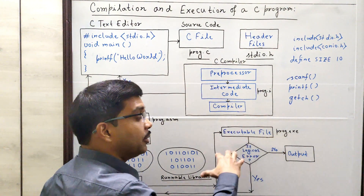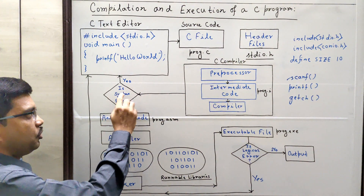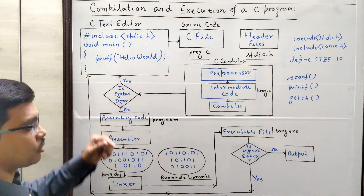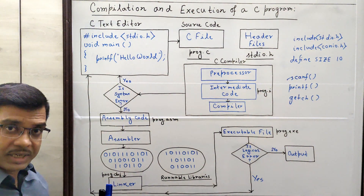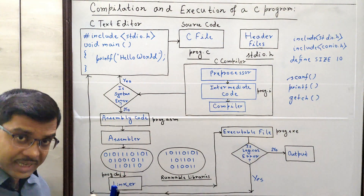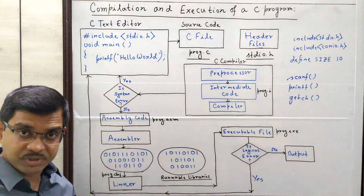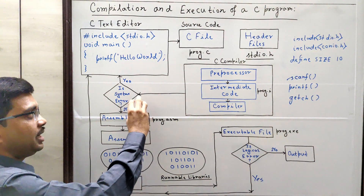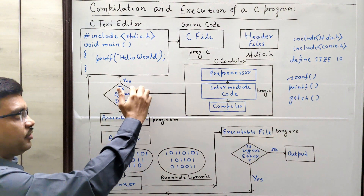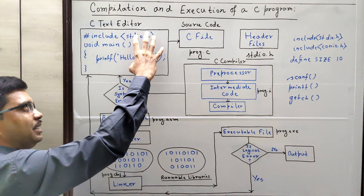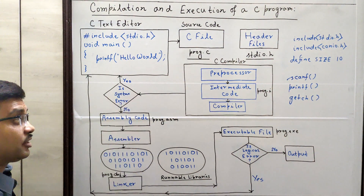Now, after preprocessing, the compiler will compile the program. In compilation, what will actually happen? It will check — this is called a decision box — whether there is any syntax error or not. Syntax error means any kind of typographical error: suppose you have missed a semicolon, missed the double quotes to print a string, used a variable that has not been declared, used an array whose size has not been mentioned, or made any kind of spelling mistakes. All these kinds of errors will be termed syntax errors, and they will be reported at the time of compilation. That is the job of the compiler. If there is any syntactical error, you have to go back to the source code and correct all these things so that the syntactical errors get removed and you can successfully compile it.